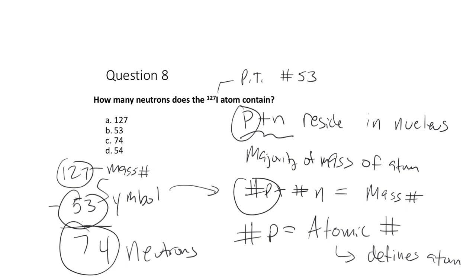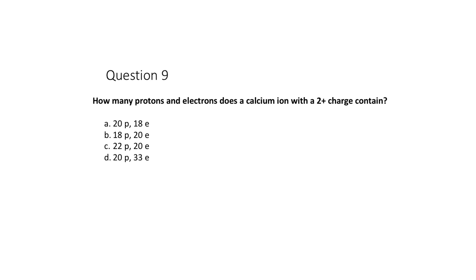What about electrons? Protons carry charge and neutrons are neutral. In a neutral atom, the electron count must equal the proton count. So neutral iodine would have 53 electrons — 53 negative particles balancing 53 positive particles with equal and opposite charges.